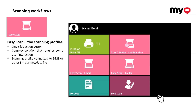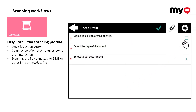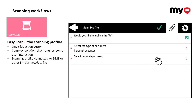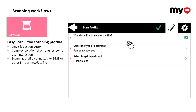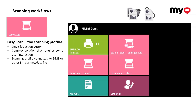So the output would look pretty much like this. The user goes there, inserts the original, presses the button, and then selects certain options — like whether to archive the file, what is the type of the document, or what is the target department, which here represents the destination to which the file will be sent. Then he confirms that, the file is scanned and delivered to one or even multiple locations at a time.